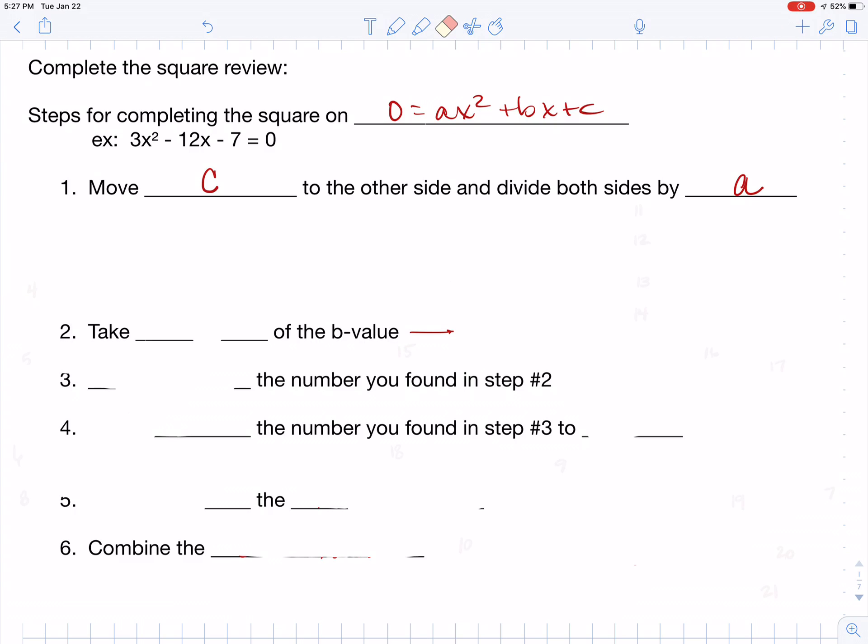Then what you're going to do is you want to take half of the b value, then you want to square that number that you just found. After you square that number, you want to add what you found in step number three. Add that to both sides.